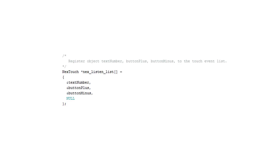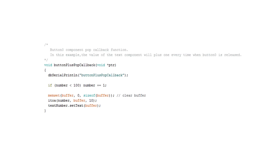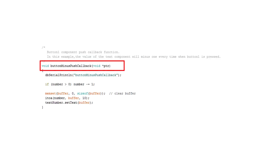Next, we have to register all objects in a list — again, just copy and paste here. As a next step, we have to define the behavior of the different buttons. This is done by defining a so-called callback function. We name the function for the plus button "plus button pop callback". Pop means that the release event of the button will be used. If we would use push, the reaction would be when we push the button. I will show the difference later on.